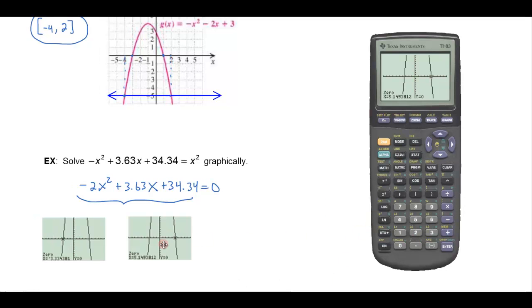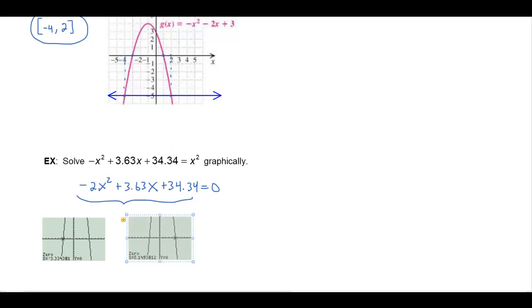So I have the two zeros right there. So it looks like the solutions to this equation would be x equals negative 3.33 rounded to the nearest hundredth, and this one would give me x equals 5.15. So what that means is if I were to take these values and plug it into this original equation, that would make it true. And these are the only two solutions that are going to make that true.